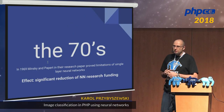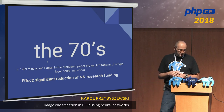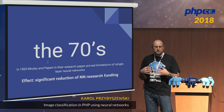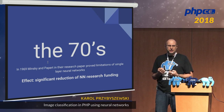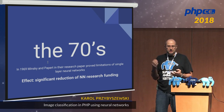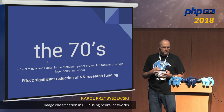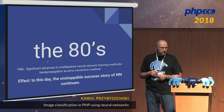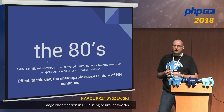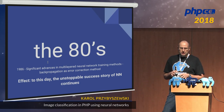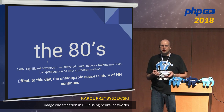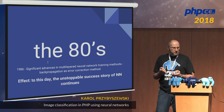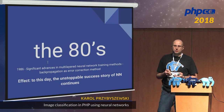There was a problem in the 70s because two guys, Minsky and Papert, in 1969 published a research paper providing a lot of limitations of single-layer neural networks. As a result, there was a cut in funding for neural networks research and it kind of stopped for a decade. But luckily in the 80s, in 1986, there was a significant advance with multi-layered neural networks. A method of learning called backpropagation was discovered, and to this day the unstoppable success story of neural networks continues.